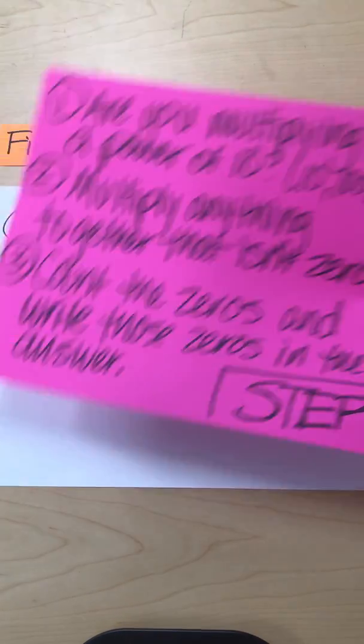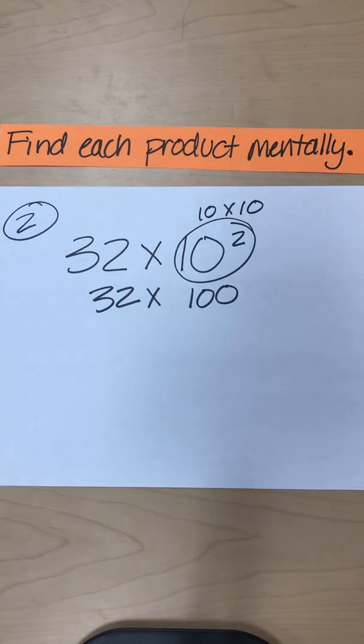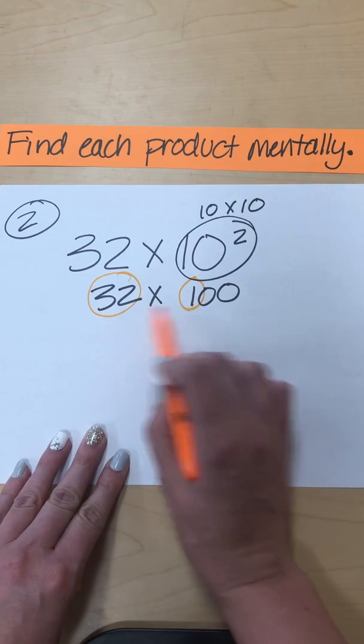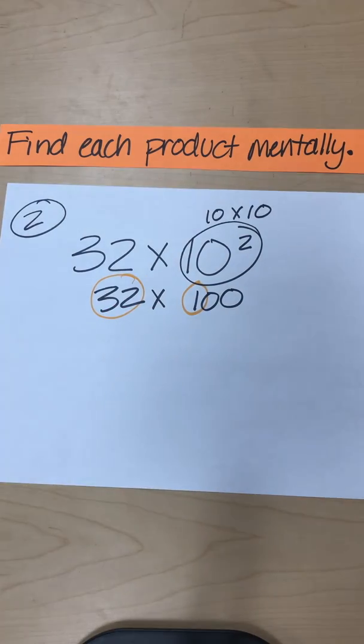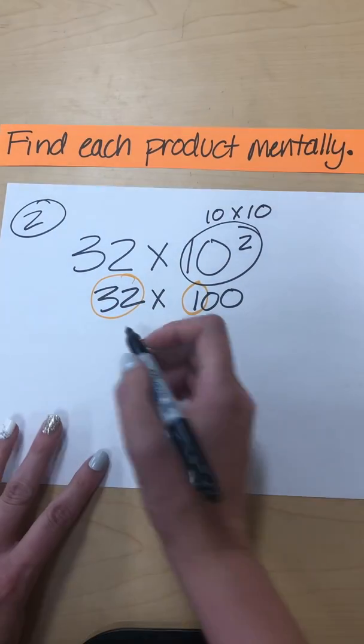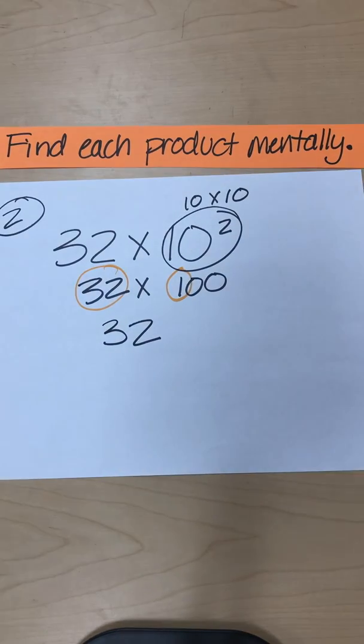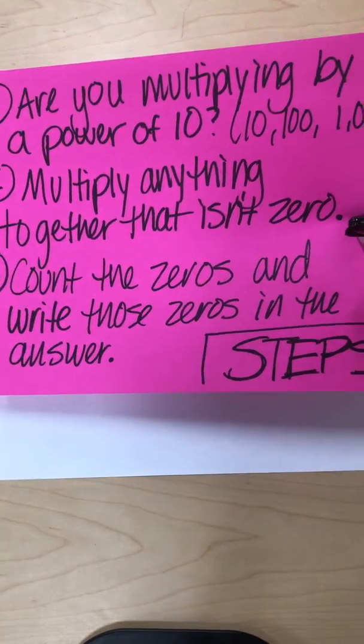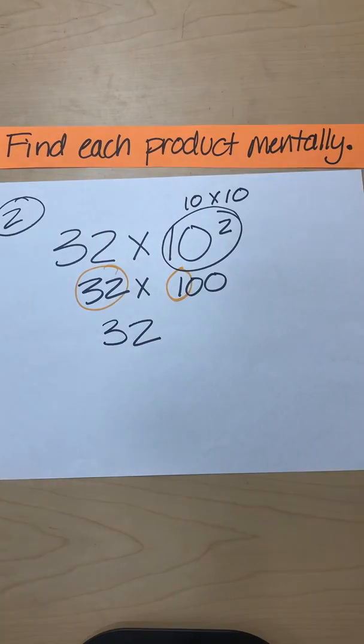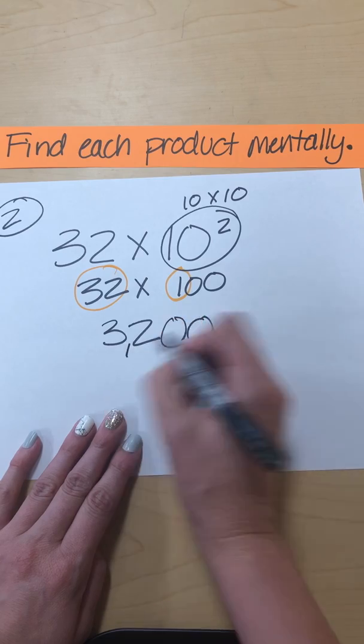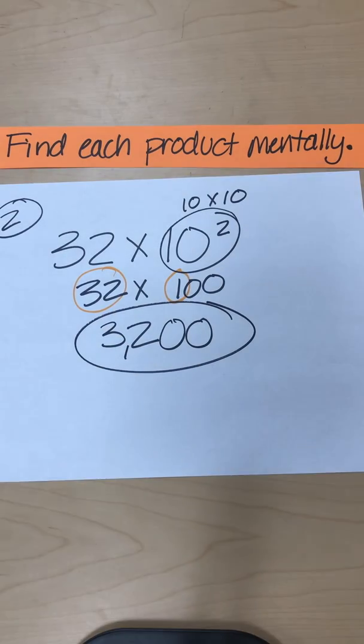Multiply anything together that isn't a zero. This isn't a zero, and this is not a zero. So let's multiply those two things together. 32 times 1 is 32. Now count the zeros and write the zeros in the answer. We have two zeros, so that's what we write in the answer. So that's number two. We are going to do one more.